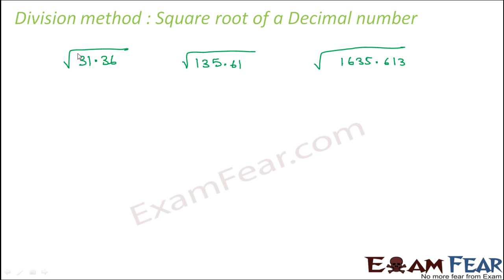So when you place bars for this number, for the whole number part you place it from the unit space like this. So for this number, your first bar will be here, your second bar would be here. For this number, your first bar would be here, your second bar would be here. So the whole number part, the rule remains the same.